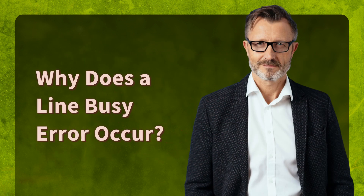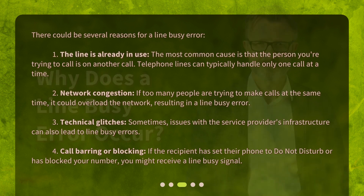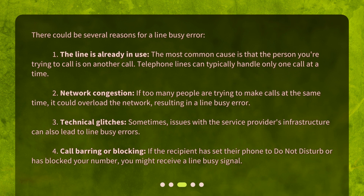Why does a line busy error occur? There could be several reasons. First, the line is already in use — the most common cause is that the person you're trying to call is on another call, as telephone lines can typically handle only one call at a time. Second, network congestion: if too many people are trying to make calls at the same time, it could overload the network, resulting in a line busy error.